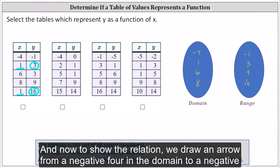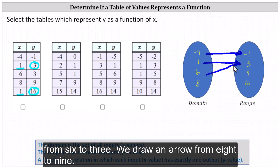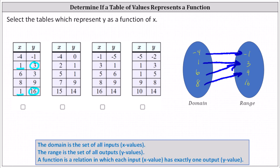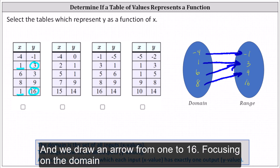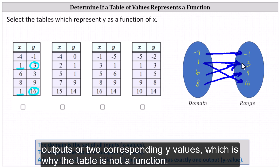To show the relation, we draw an arrow from negative four in the domain to negative one in the range. We draw an arrow from one to three, from six to three, and from eight to nine. And we draw an arrow from one to 16. Focusing on the domain value of one, we can easily see the x value of one has two corresponding outputs or two corresponding y values, which is why the table is not a function.